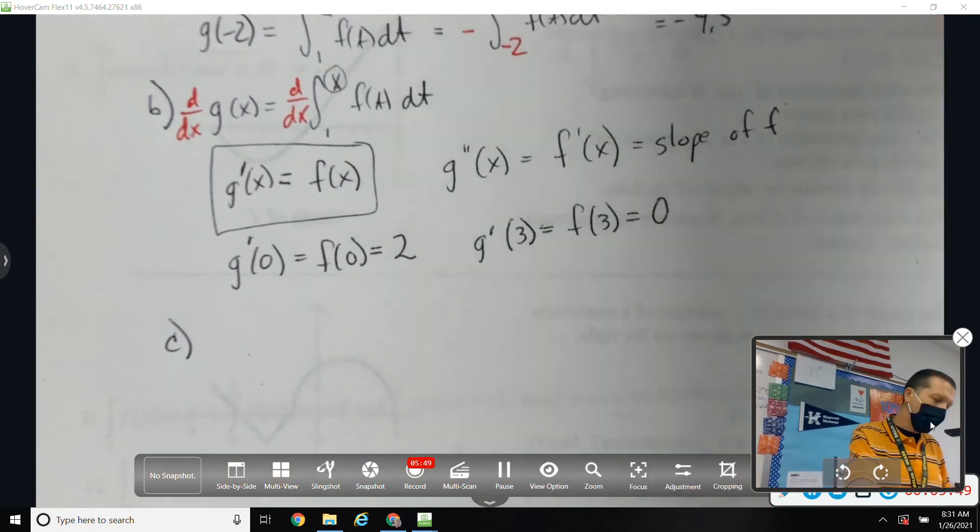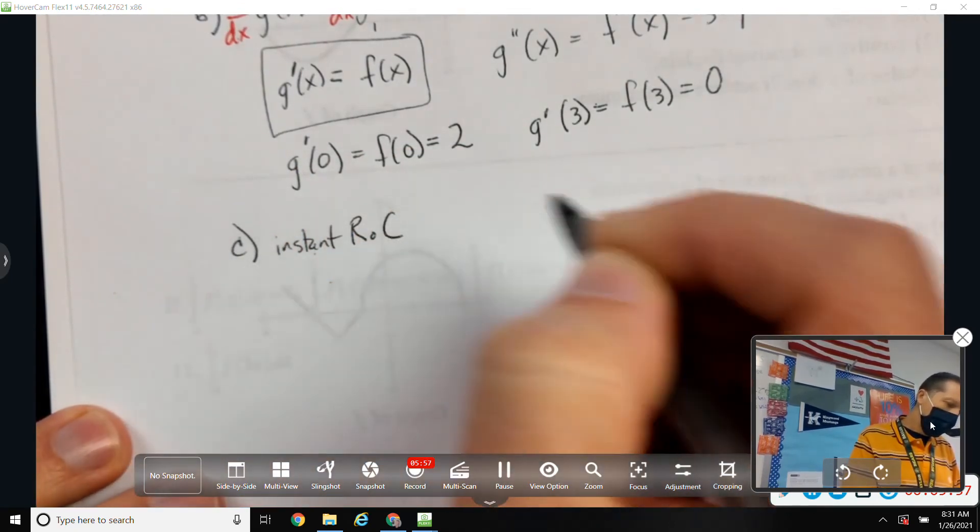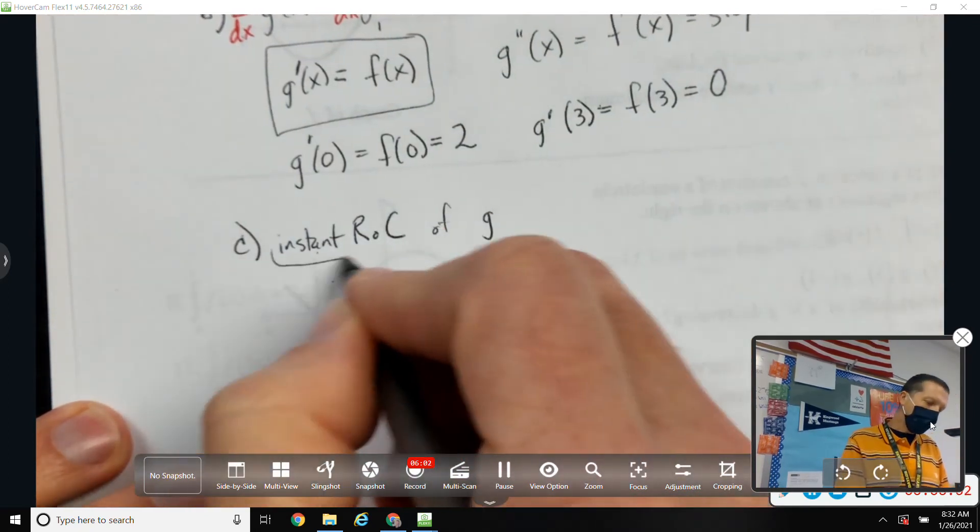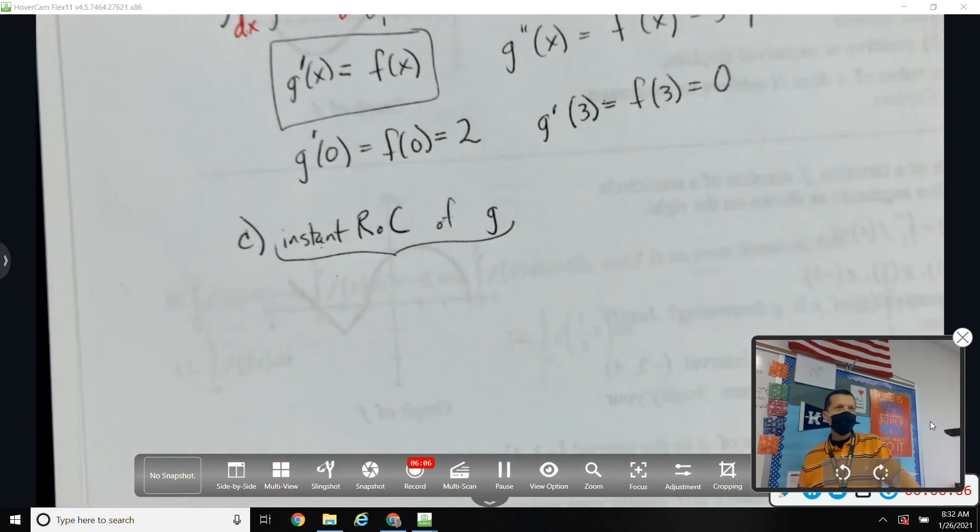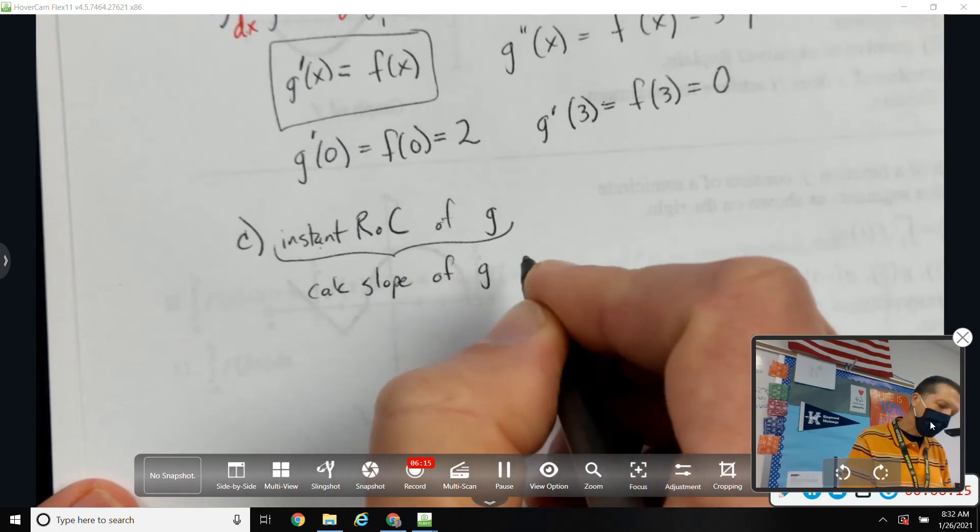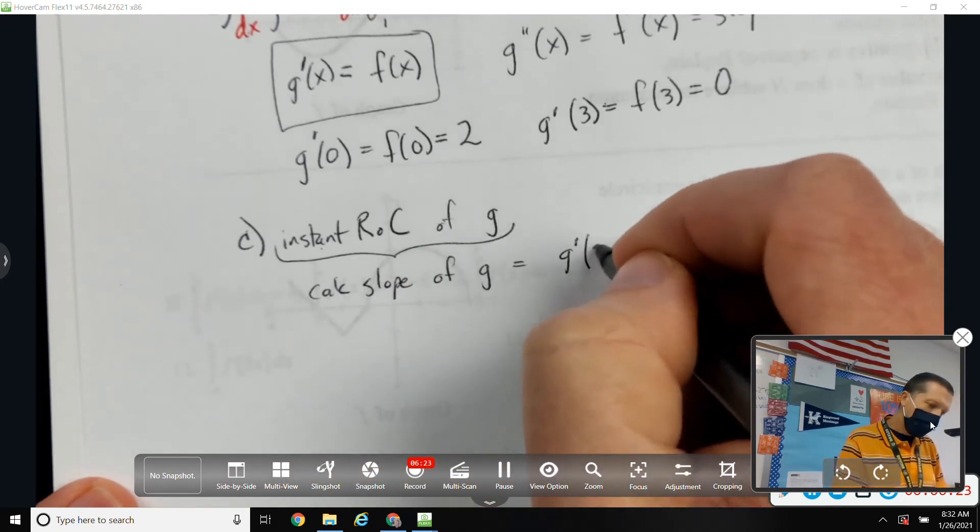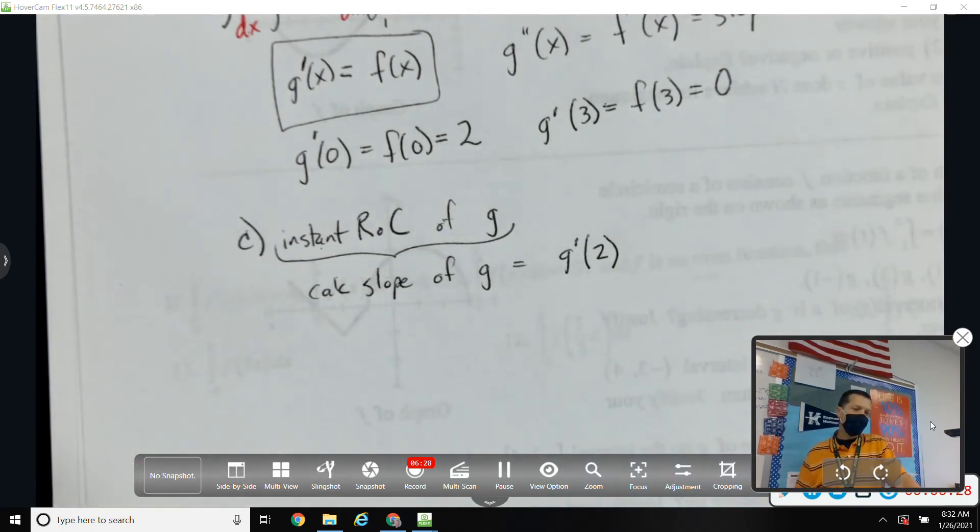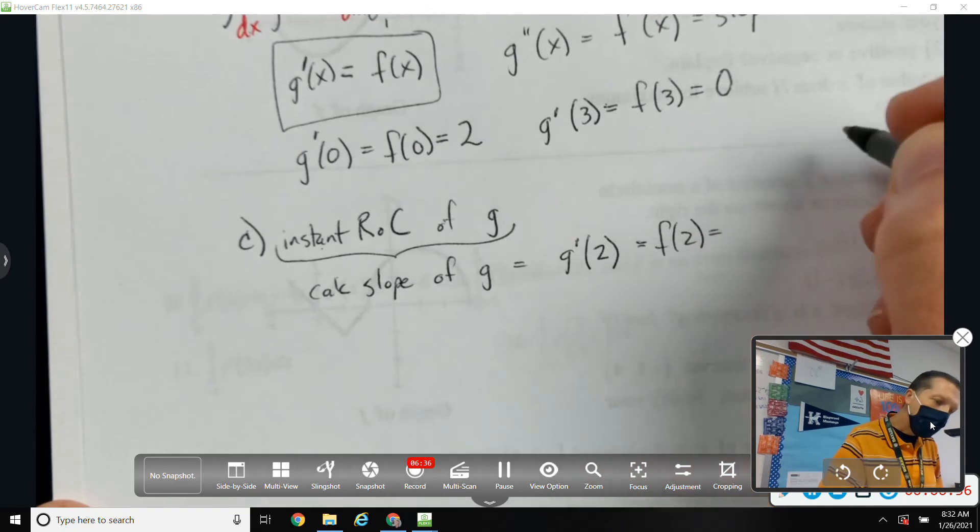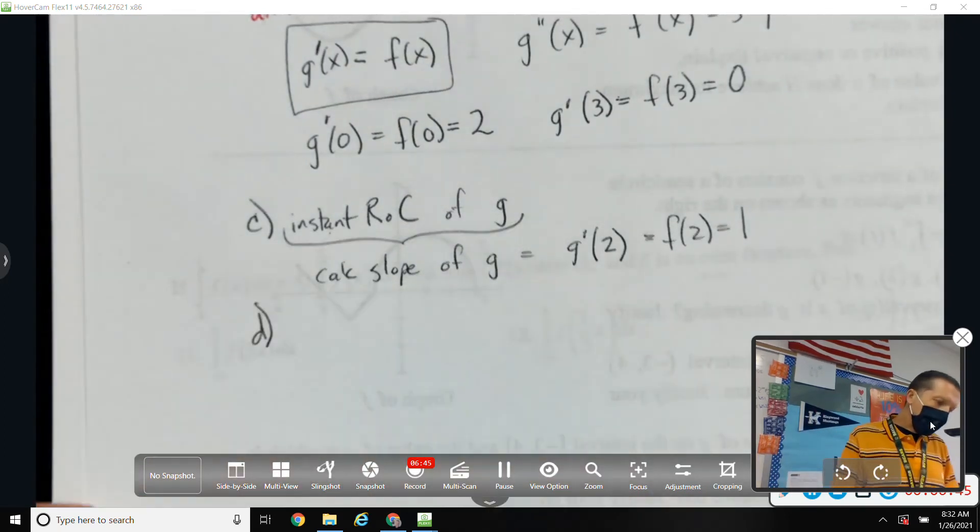Now we get to the ones where the reason you asked this question. Find the instantaneous rate of change of G. Okay, that's fancy talk for what? The slope of G. The calculus slope of G. The derivative of G. So that's fancy talk for G prime at 2. So it was just the words there. So B and C are the same question. They're just worded differently. Find G prime at 2. Well, we know that's F of 2. And so that looks like 1.